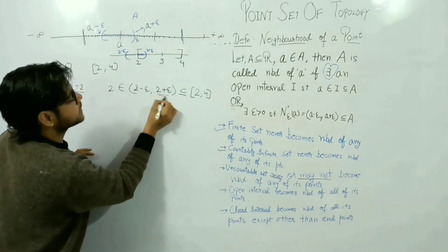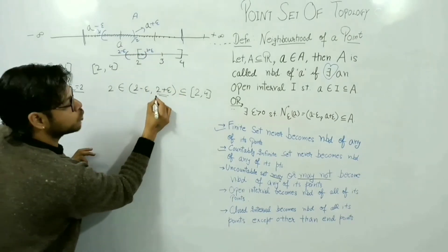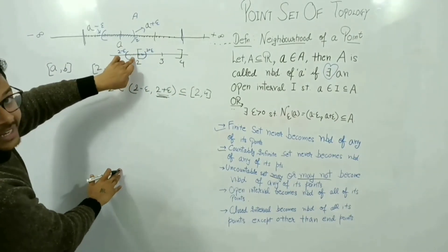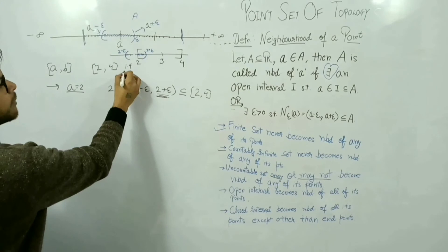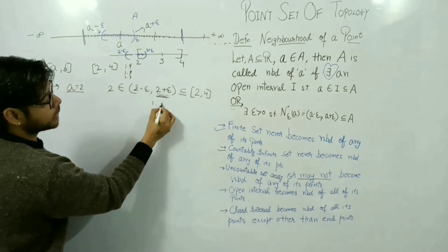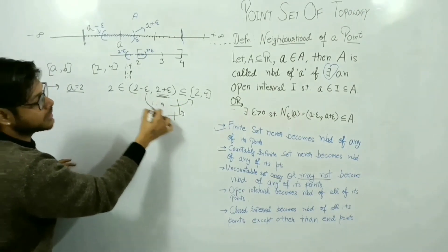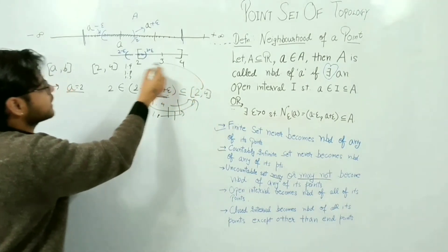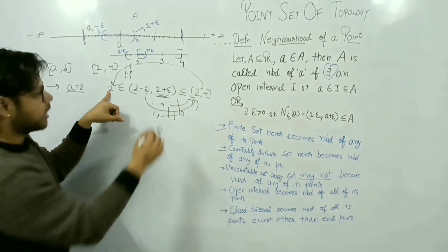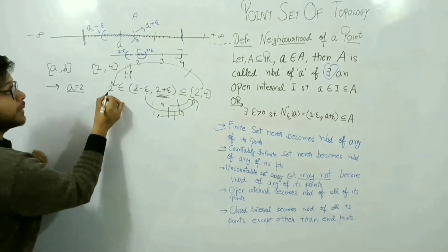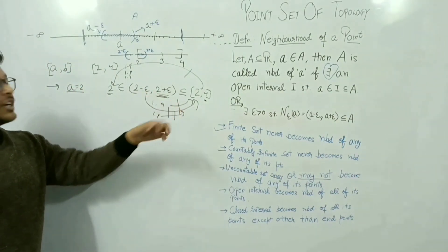The interval (2 minus epsilon, 2 plus epsilon) around the point 2 will extend to the left of 2, including values like 1.9 or 1.8. These points are not in the set (2, 4). So this open interval cannot be a subset of (2, 4), which means 2 is a boundary point and is not a neighborhood point of (2, 4).